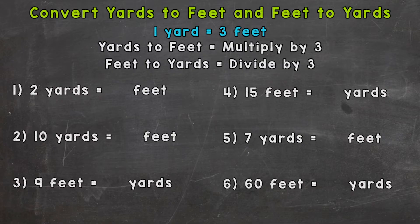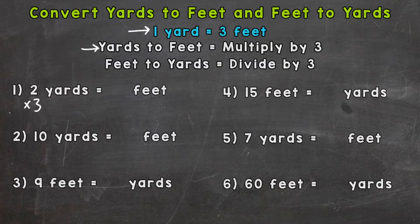Let's jump right in. Number one: two yards equals how many feet? If we take a look at the notes in blue, we know that one yard equals three feet. So here we have two yards, going yards to feet, we multiply by three. Two times three gives us six feet. Think of yardsticks — one yard stick is three feet, and we have two yard sticks, so three plus three, which is two times three, gives us six feet.